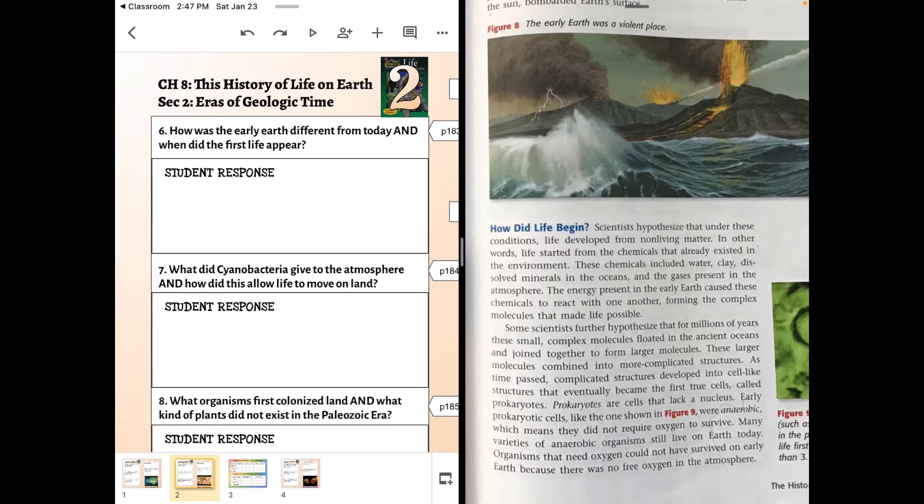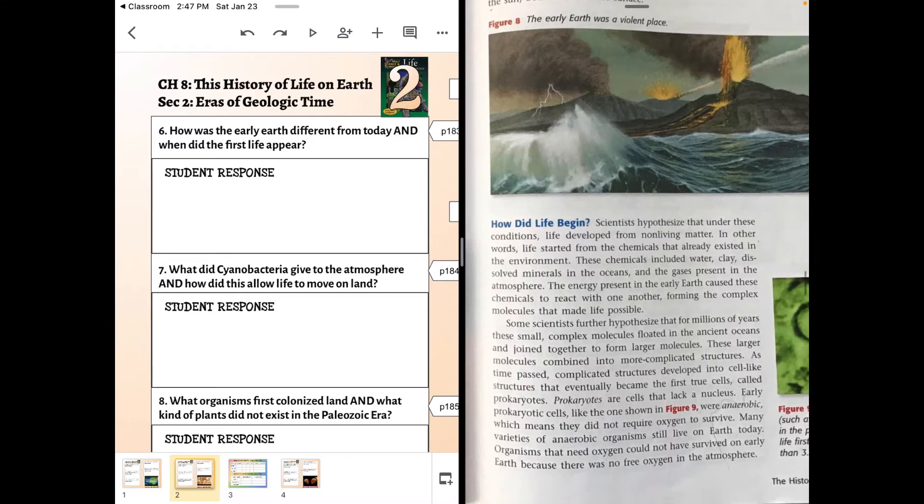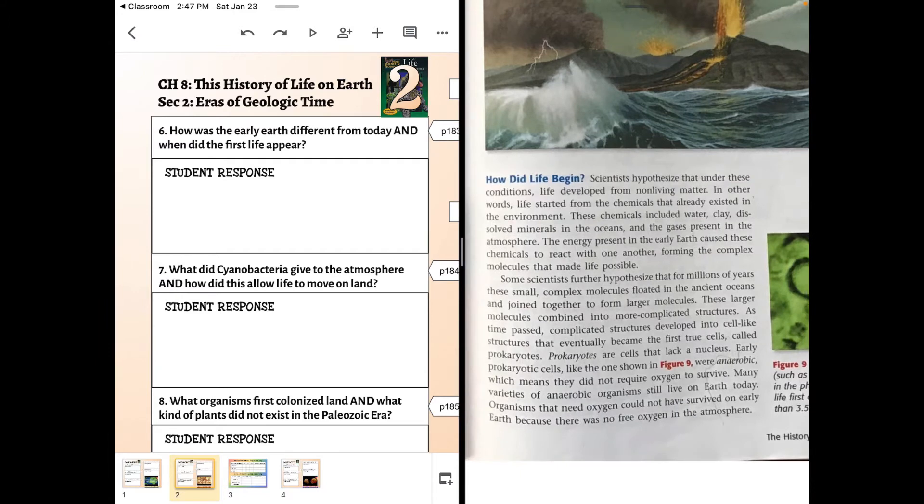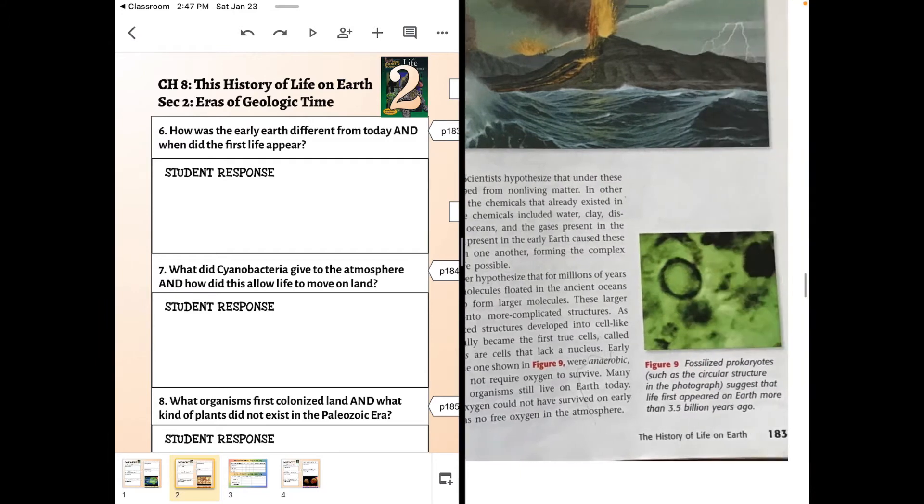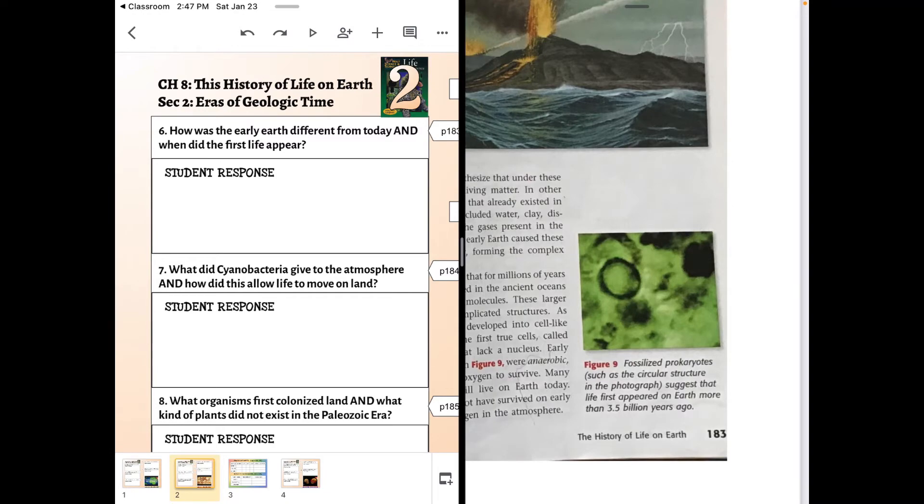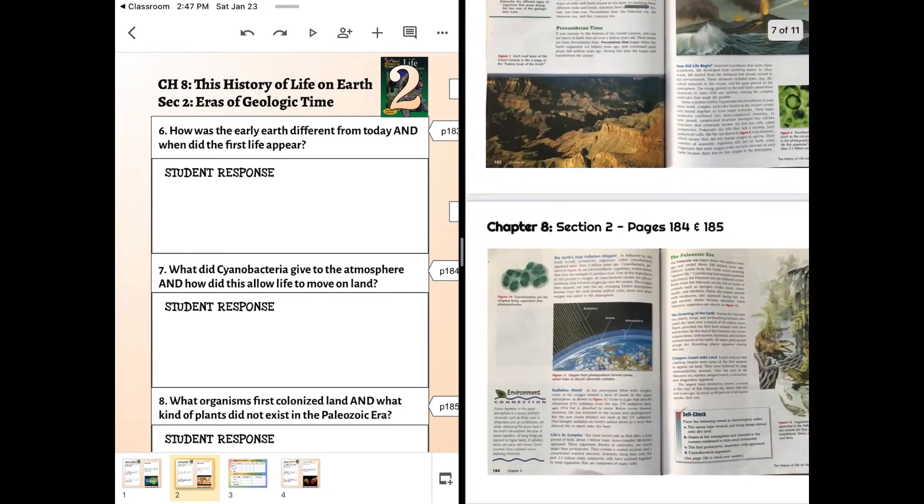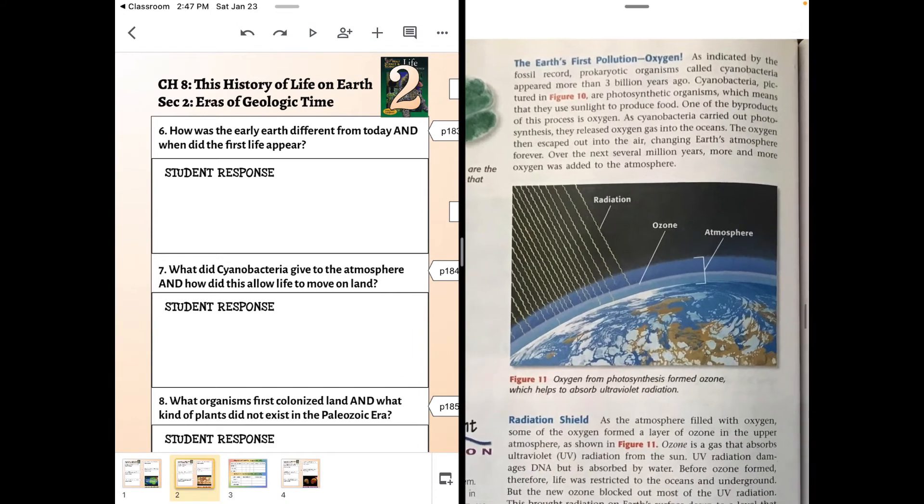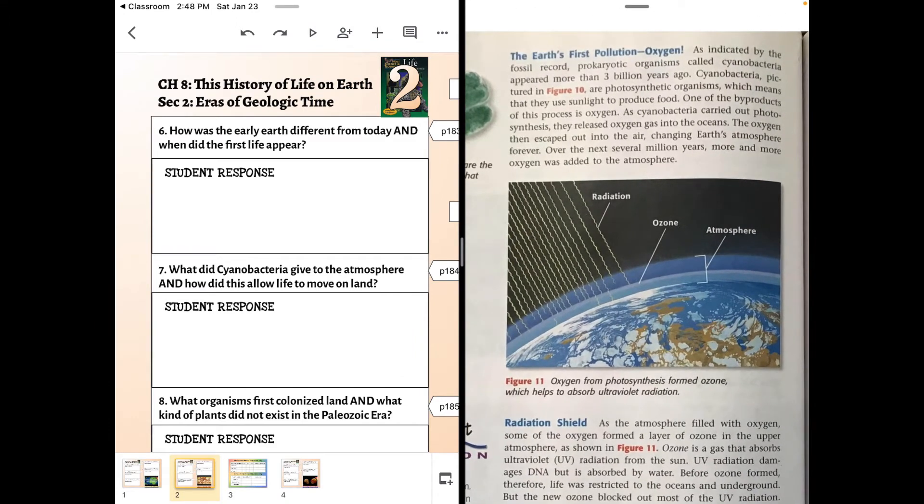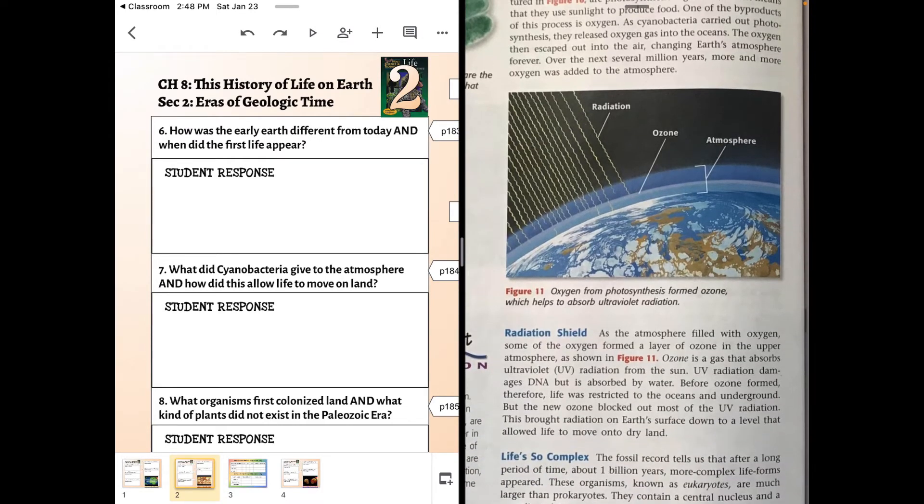Question 7. What did cyanobacteria give to the atmosphere? Well, they gave it something from photosynthesis, but that is not the answer to the second part. How did that allow life to move on land? This picture is trying to show you, and it wasn't so much the breathing. There was something else going on that the addition of oxygen allowed for life to move on land. And so this page really covers that.